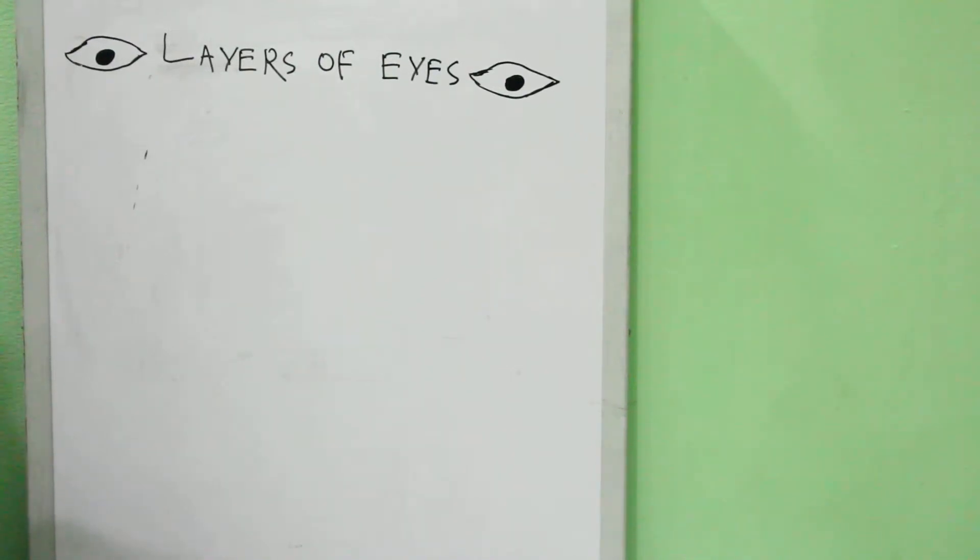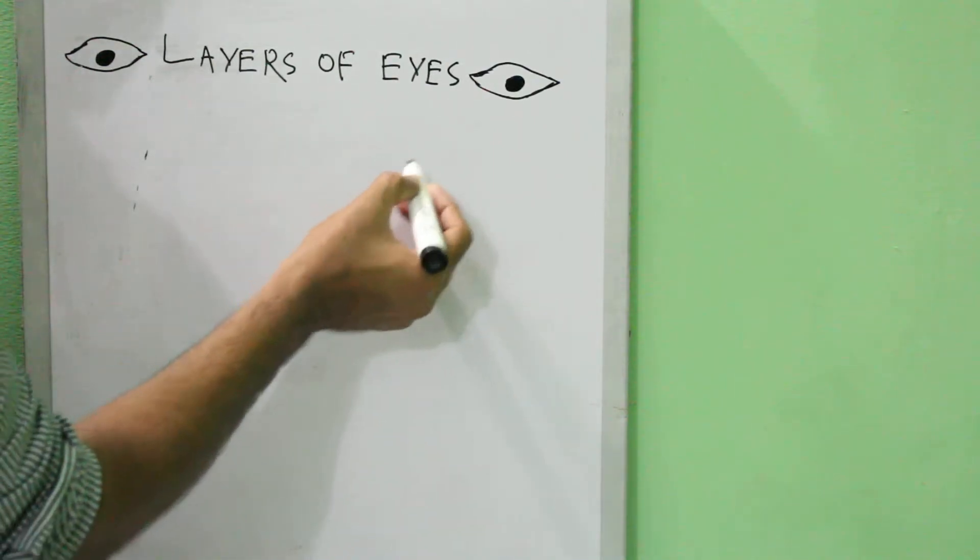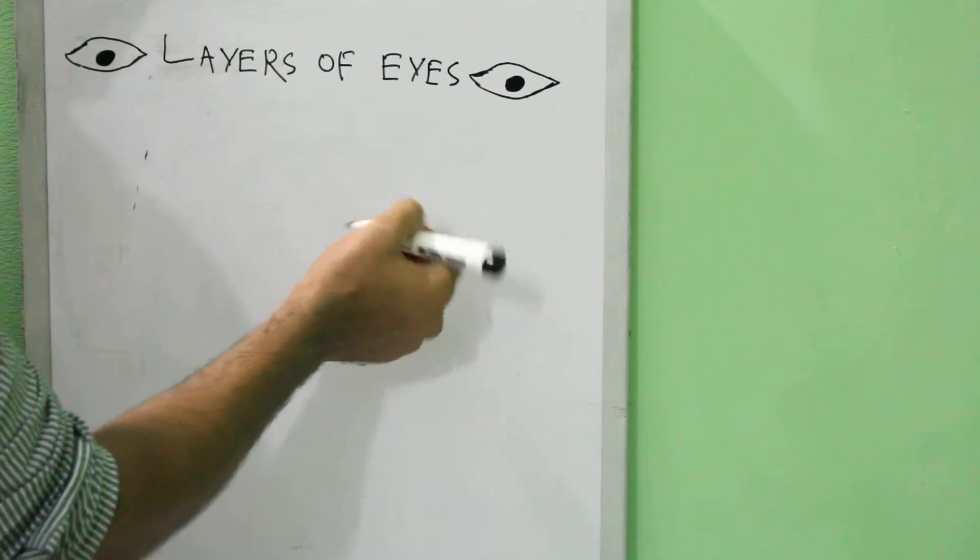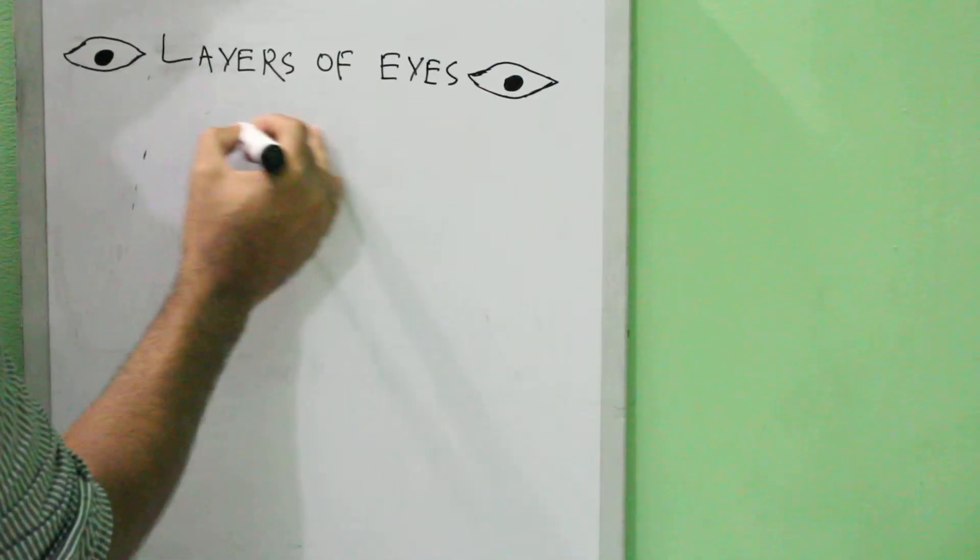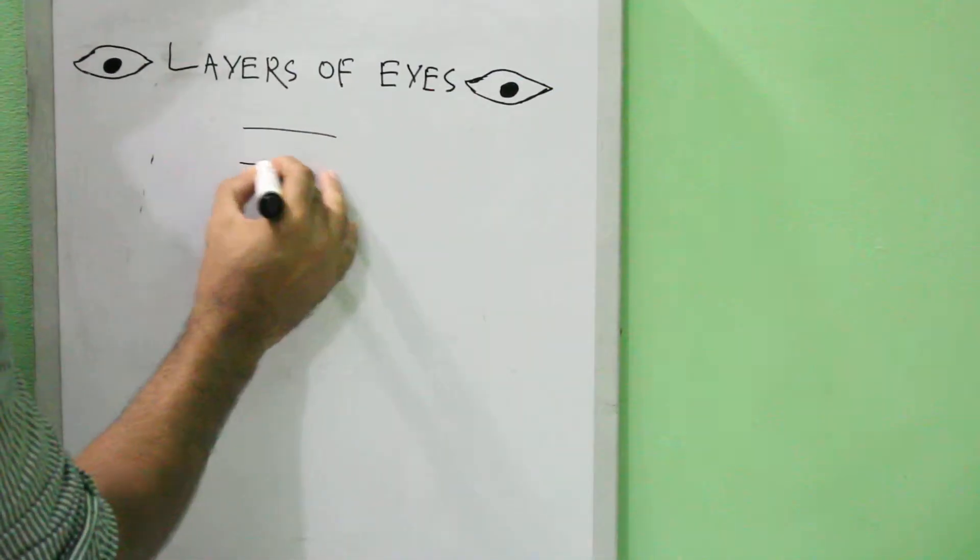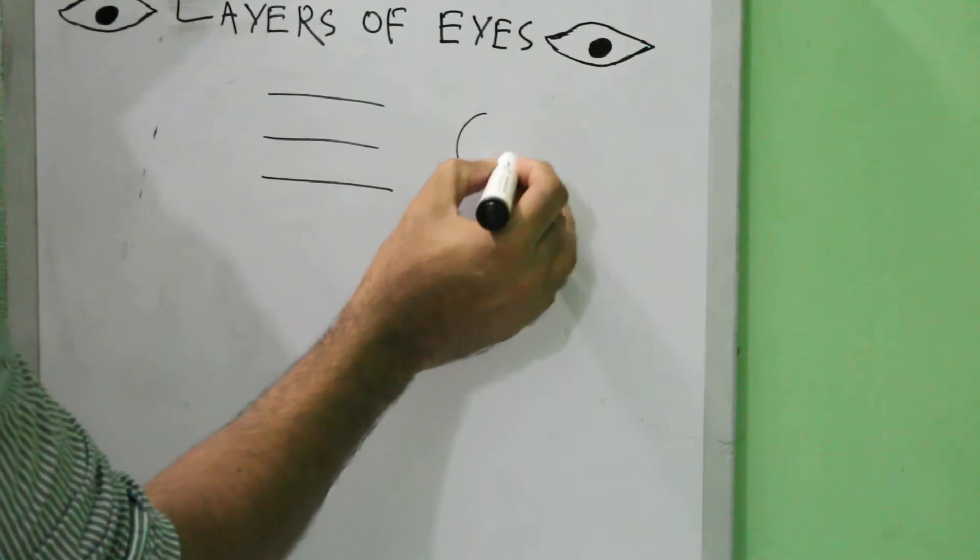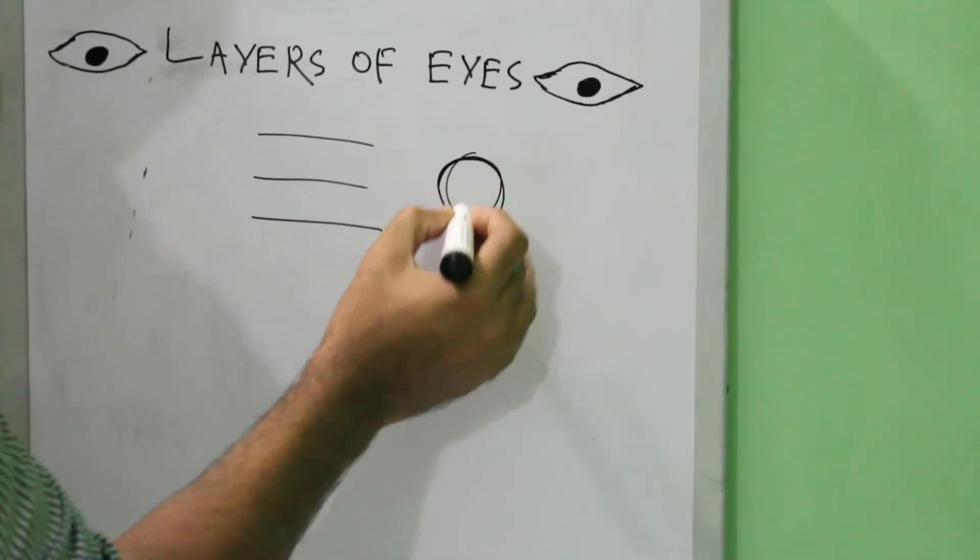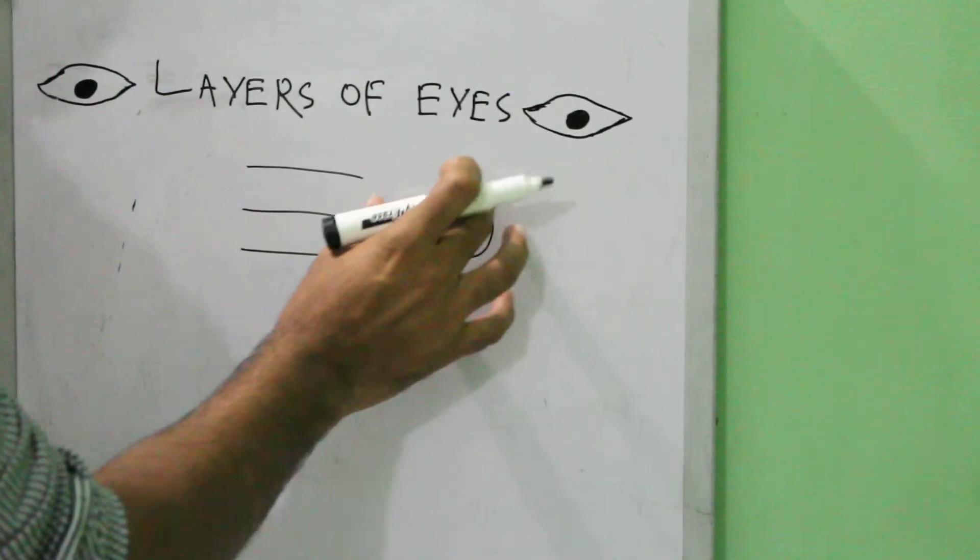Welcome to the channel Knowledge. In today's video, I'm going to discuss the layers of eyes. The eyeball is present in the bony orbit. There are three layers of the eyeball. Now you should know what is an eyeball.